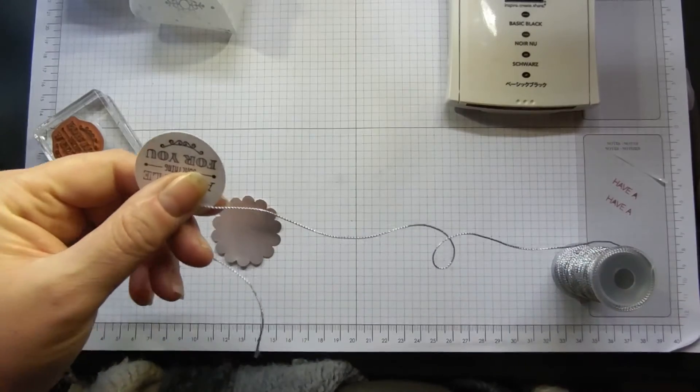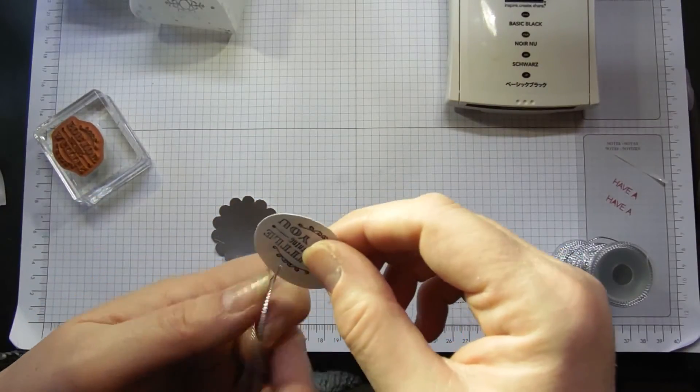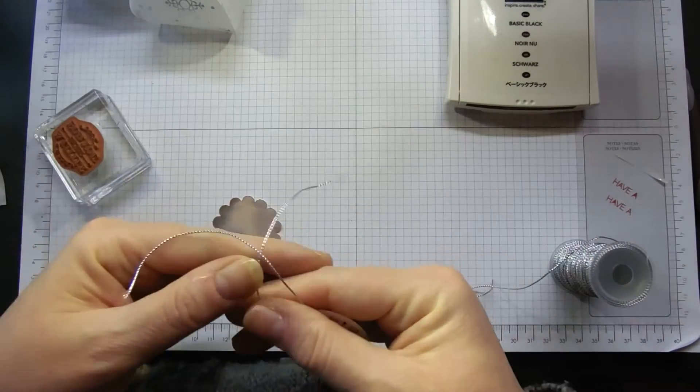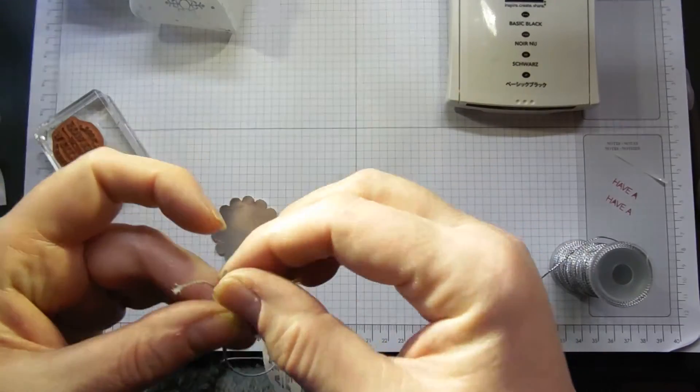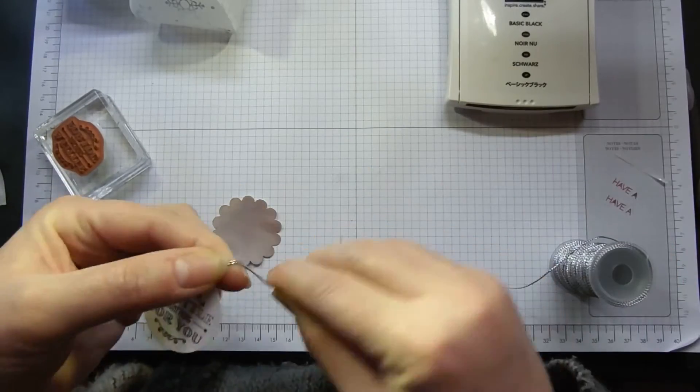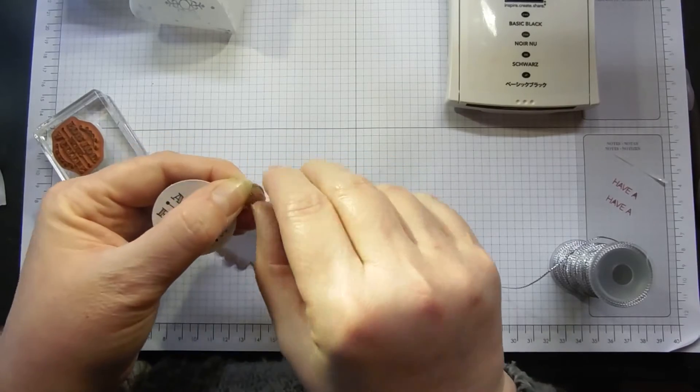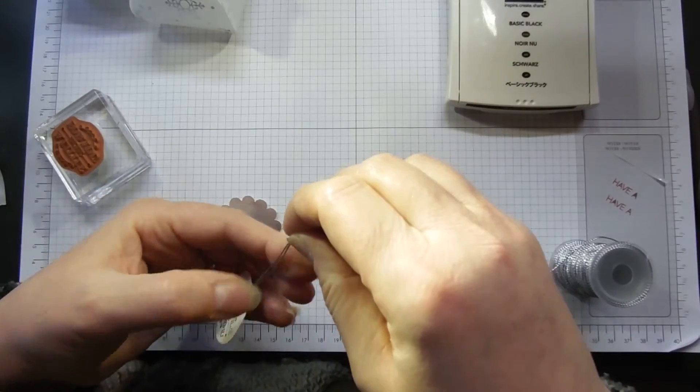There you go. Leave reasonably long ends so it'll all nicely dangle. Tie a little knot down near the sentiment, right down here.